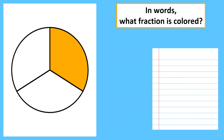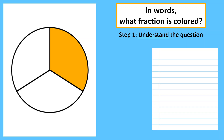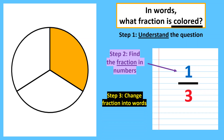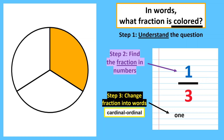Let's practice again with another example. In words, what fraction is colored? Understand the question — we want the parts that are colored. Step two: find the fraction in numbers. Step three: change this fraction into words. Numerator — write it as cardinal, so that's one. Denominator — write it in ordinal number: three becomes third. So it is one-third. Don't forget the dash.